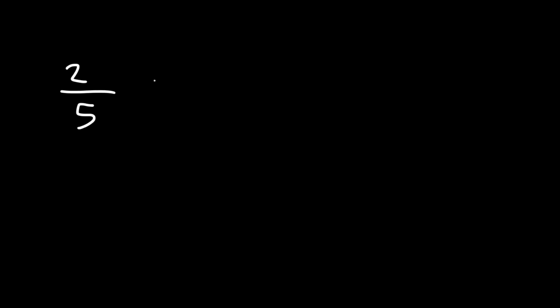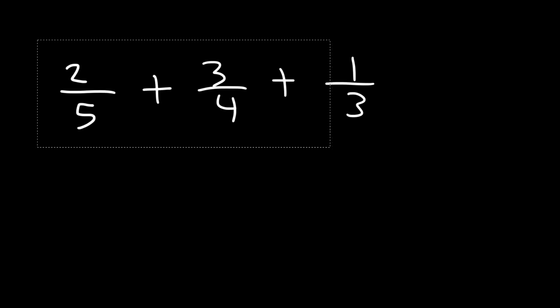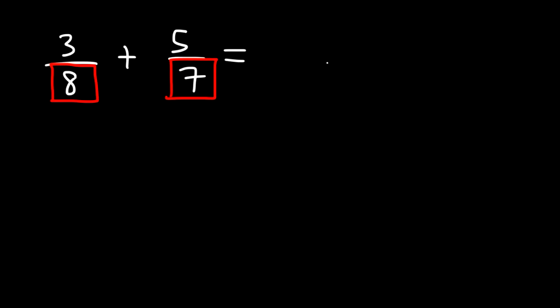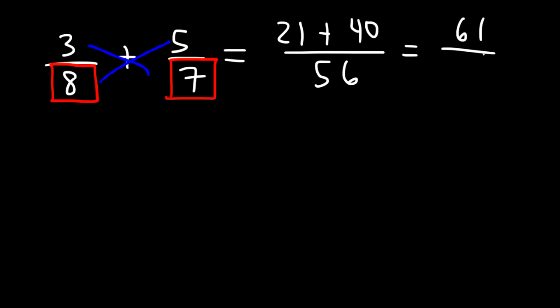At this point you know how to add two fractions. But what if you need to add three fractions? Before we go into that, I want to show you another example of adding two fractions using a different method. Let's use 3 over 8 plus 5 over 7. Using the familiar method: 8 times 7 is 56, then cross multiply — 3 times 7 is 21, and 8 times 5 is 40. Adding 21 plus 40 gives 61, so the answer is 61 over 56.